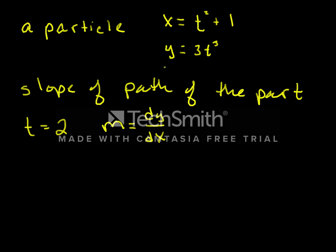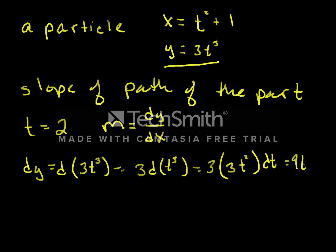But what is the differential of y? Well, y is 3t³. So the differential of y is the differential of 3t³, which is the 3 times the differential of t³, which is equal to 3 times 3t² dt, or 9t² dt.